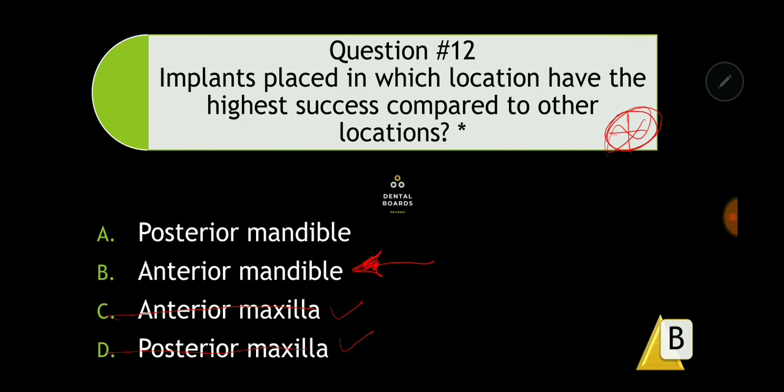The anterior mandible has the highest implant success compared to other locations because there is a lot of dense cortical bone there. That's why when a patient loses bone height, you can place four to five implants in the anterior mandible.